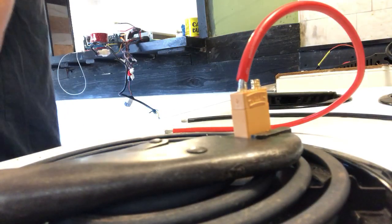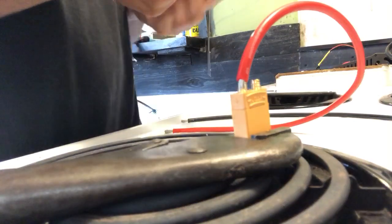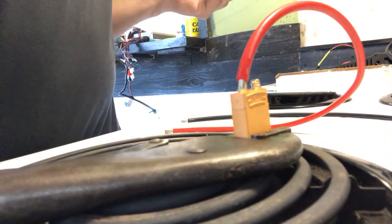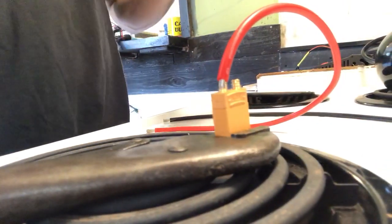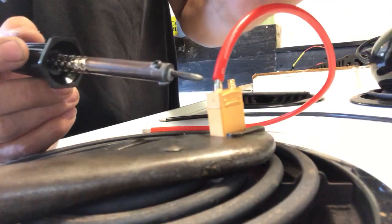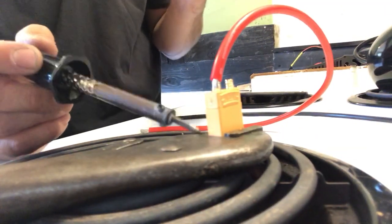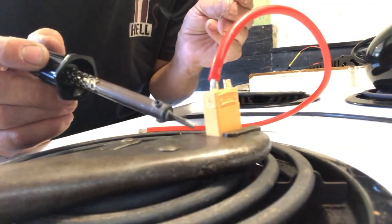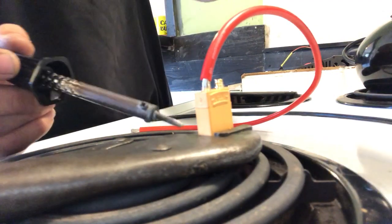Alright, what we're gonna do is, got a little piece of solder here. Okay, so I have two sides of the... I have the opposite side XT60 on here. You can't see it, but it's clamped in.